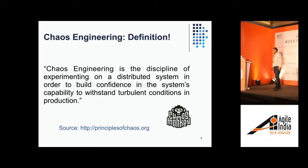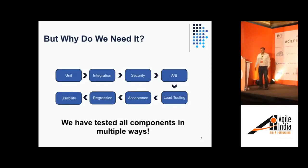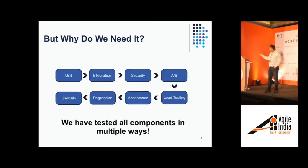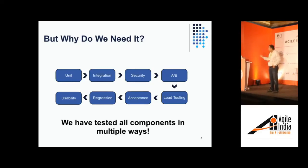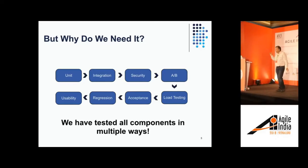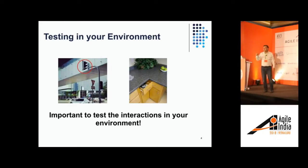Before I expand further on chaos engineering, I want to address why we actually need it. In any tech program, they teach about all sorts of testing — unit, integration, security, etc. Typically, when you build your system and put it in production, you've tested your components individually and together in multiple ways. So the question is: why do we need another form of testing? With all that testing, the focus is on your actual system and how it behaves. But there is one thing missing in all of those tests, which is what chaos engineering actually tests.